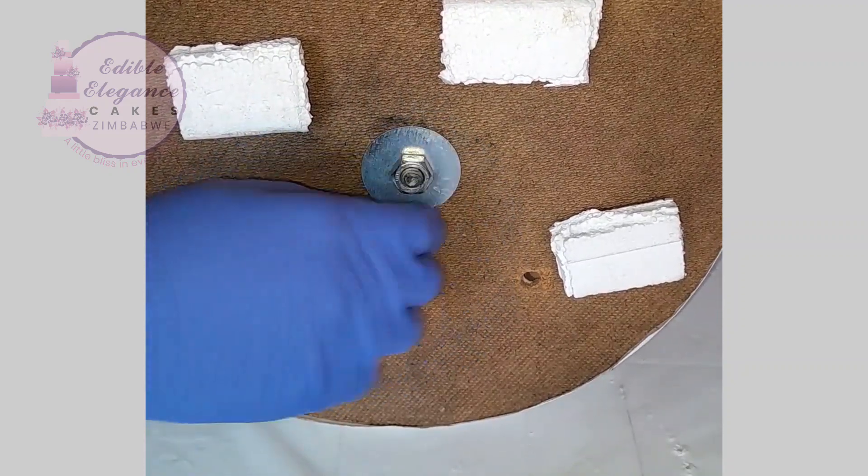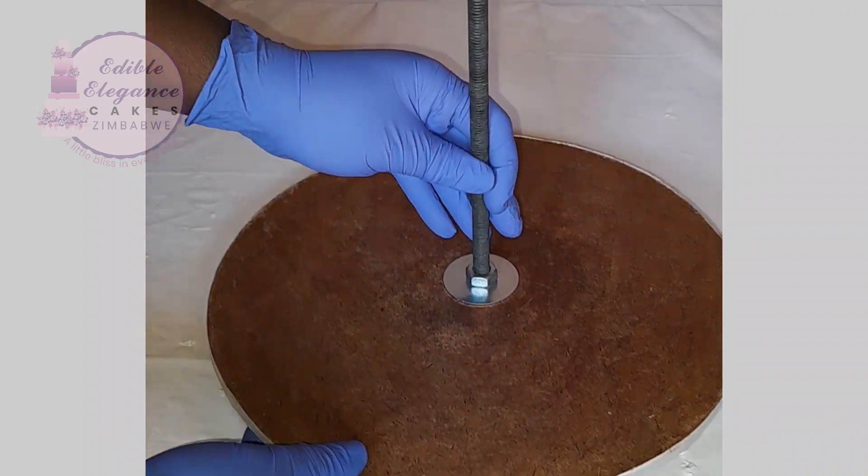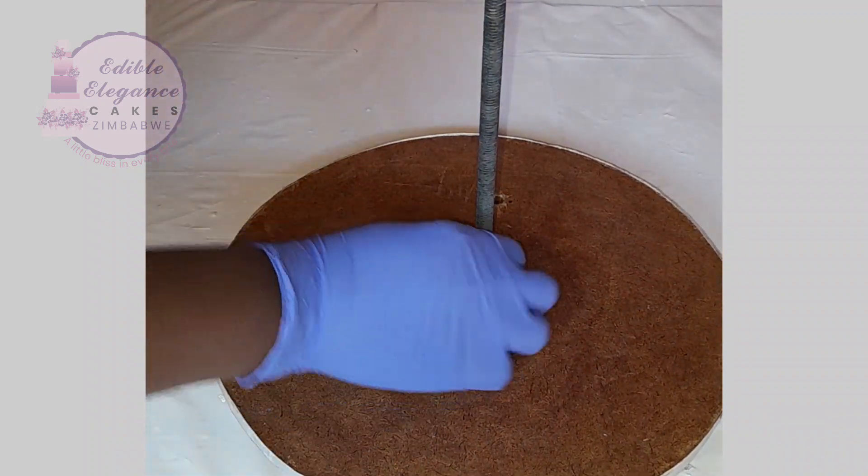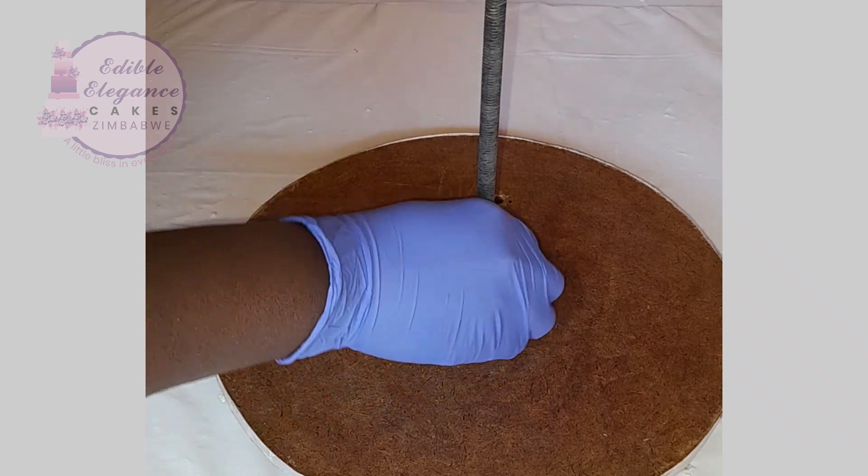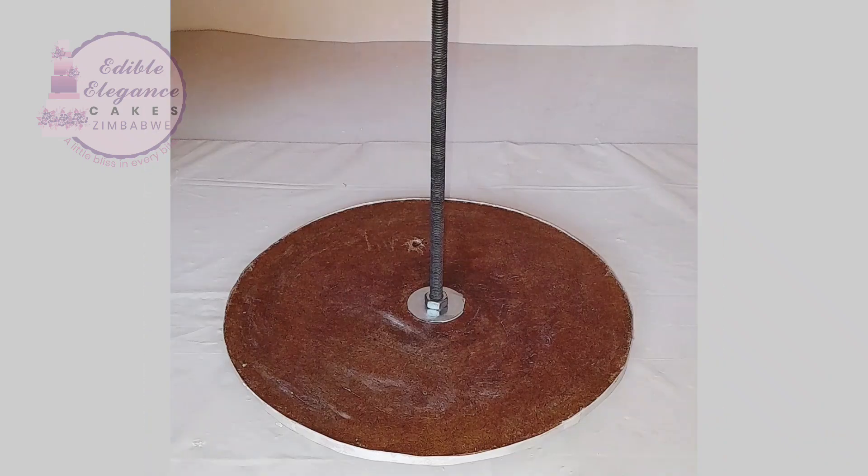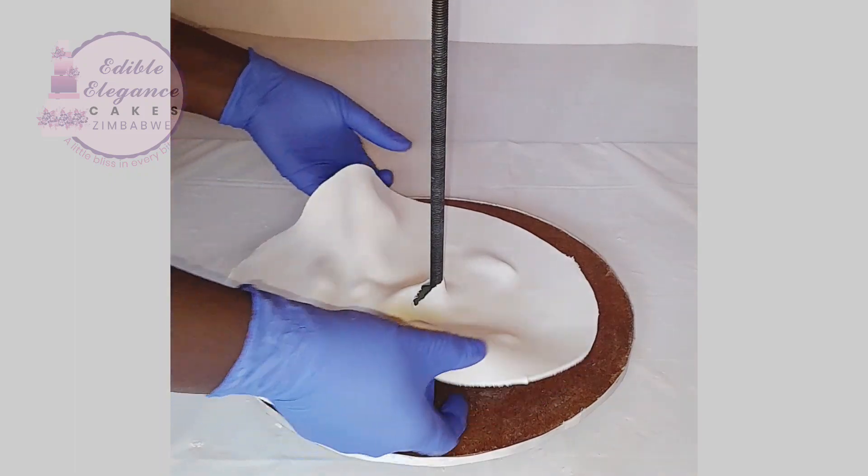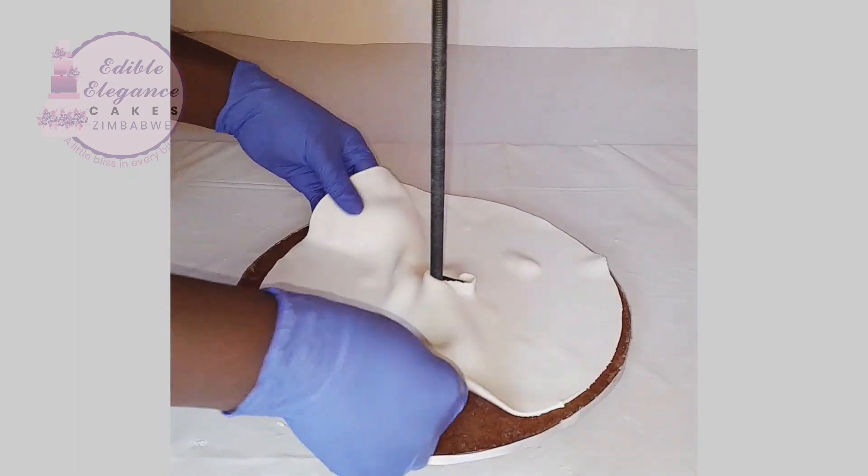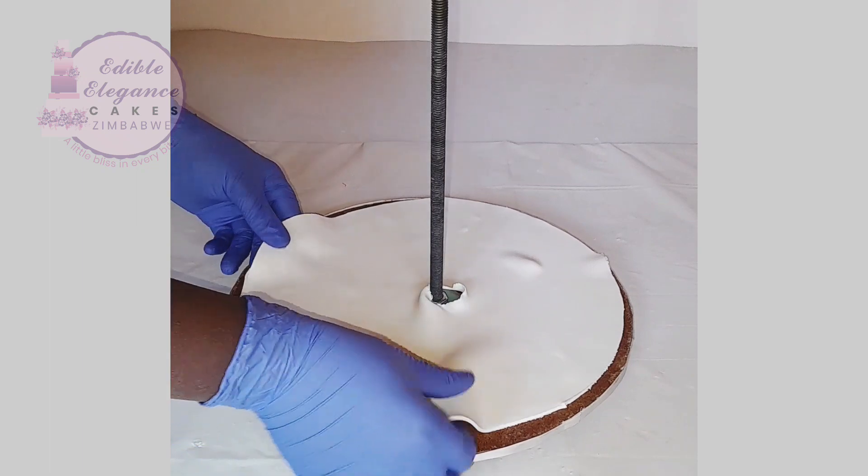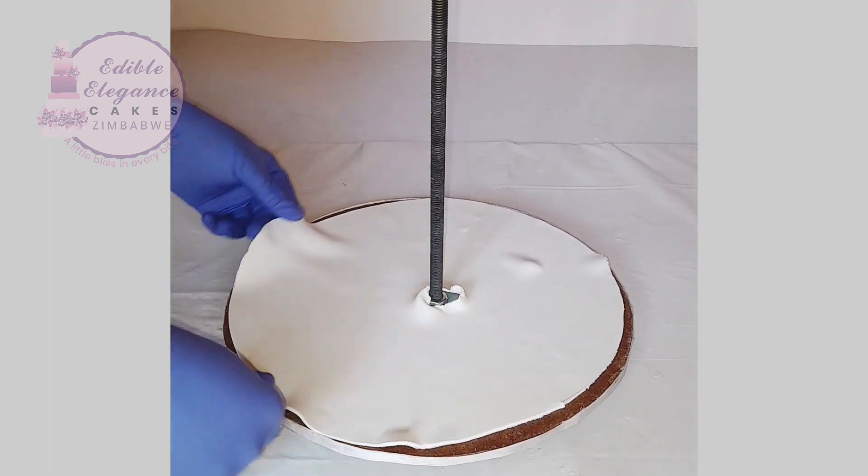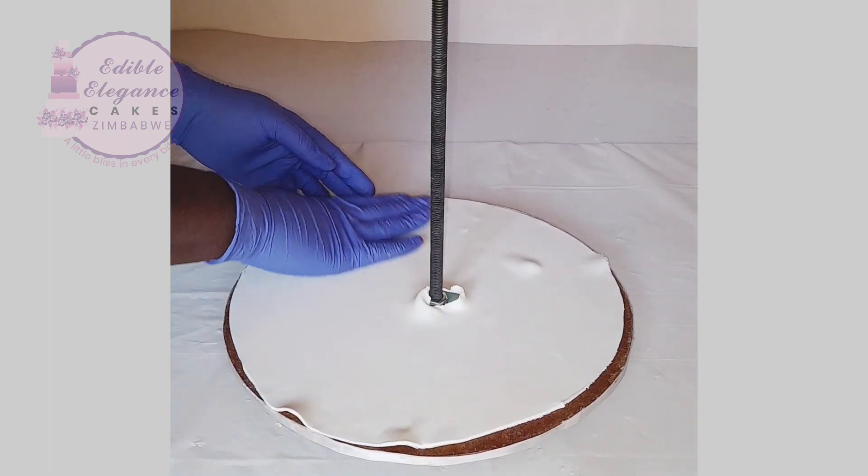Do secure your rod with hot glue after screwing the nuts in. You will notice the consequences of not applying glue as we progress. So we cover our wooden board with fondant before we start stacking our tiers.